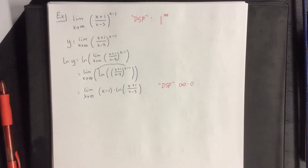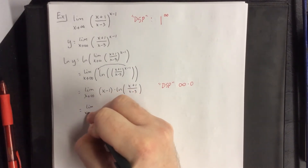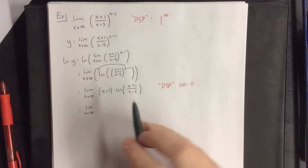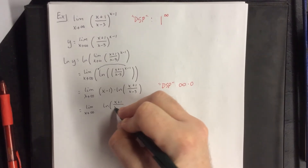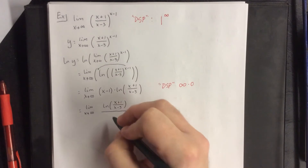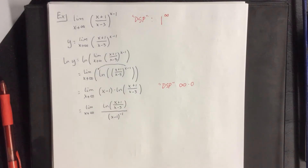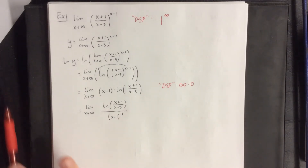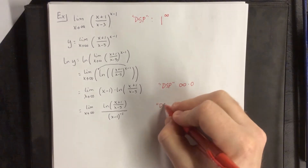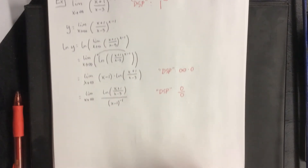We force a fraction to turn it into an indeterminate quotient. We do not move the natural log to the denominator — that gets too complicated. Instead, we move x minus 1 into the denominator as 1 over x minus 1. Now the numerator goes to 0 and the denominator goes to 0, giving us 0 over 0, so we can officially apply L'Hôpital's rule.